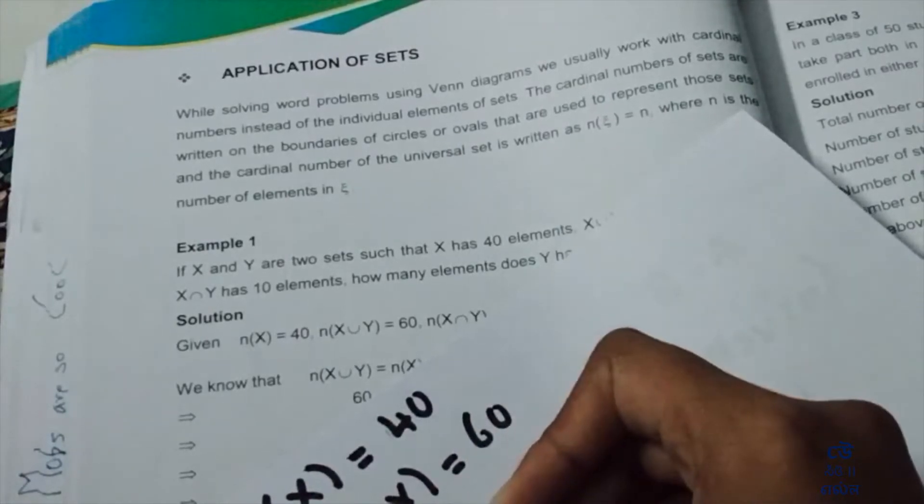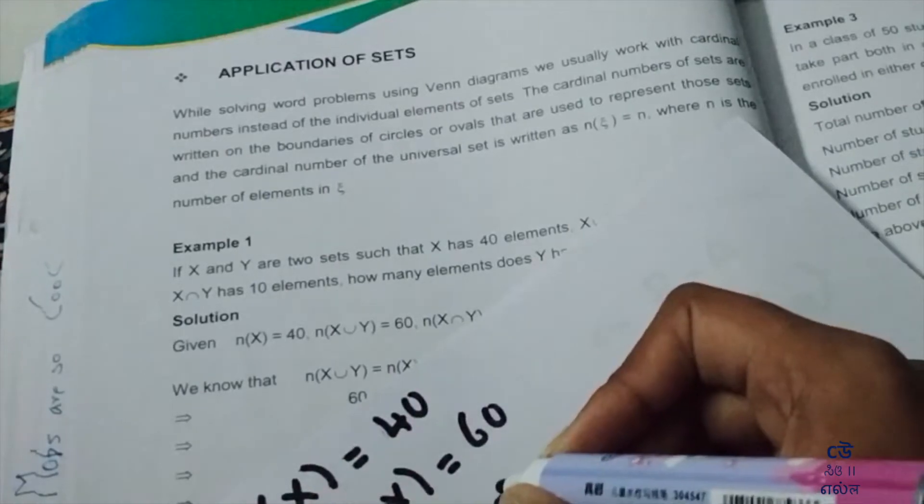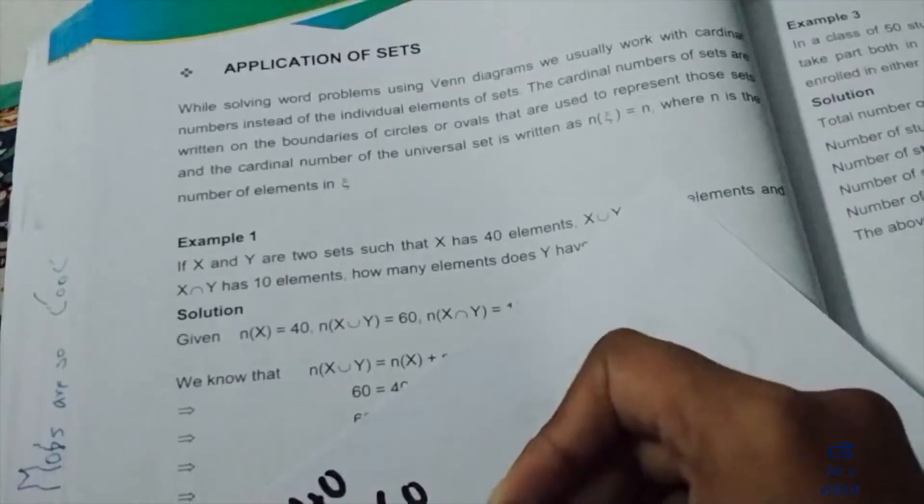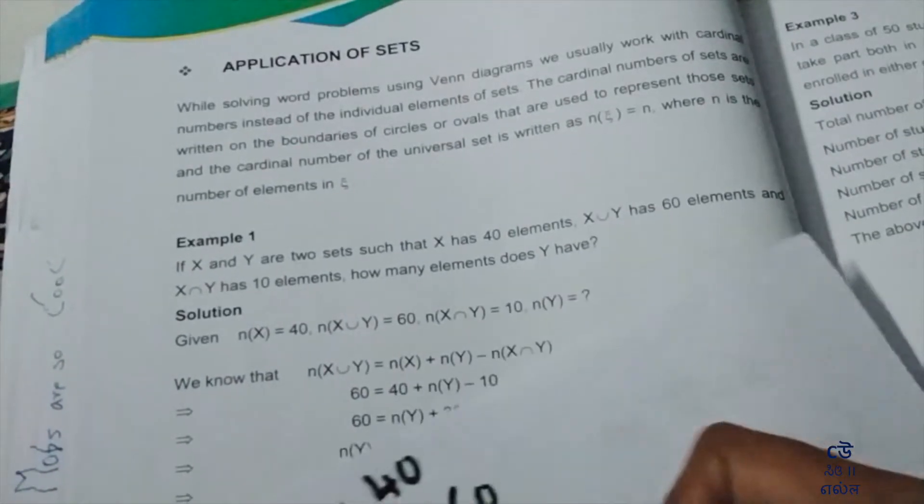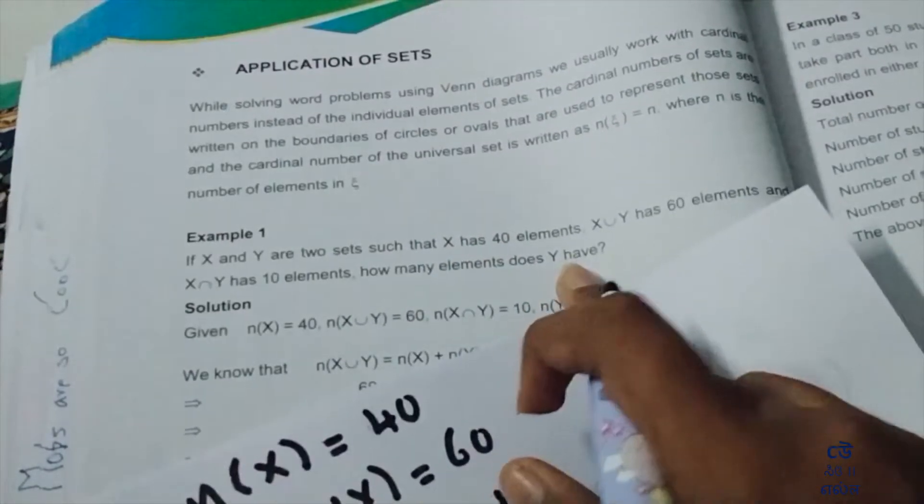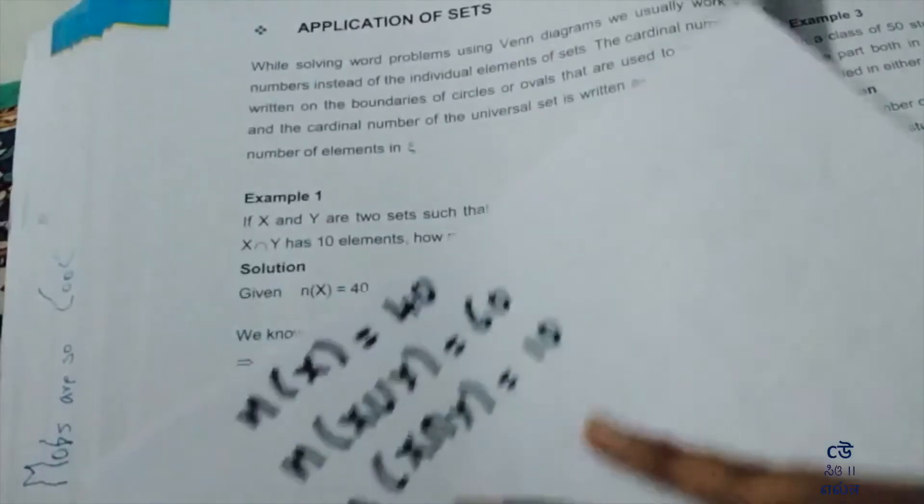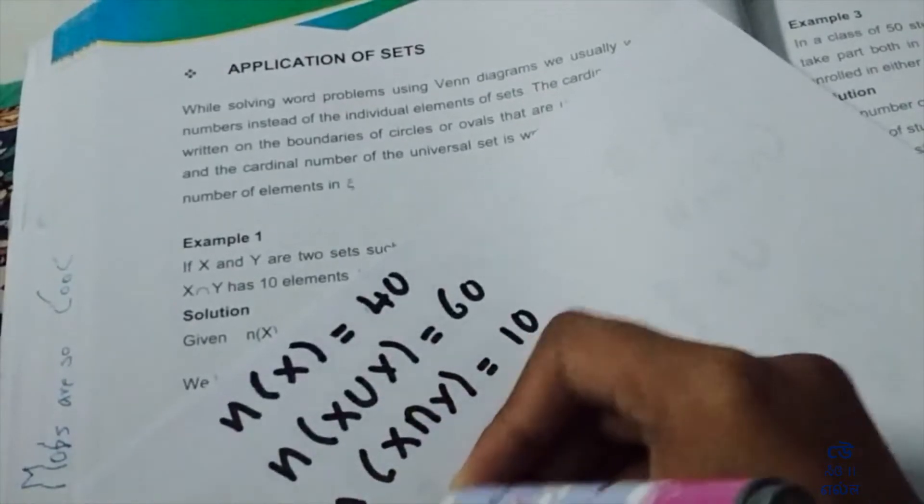First question: If X and Y are two sets such that X has 40 elements, n(X) = 40, X union Y has 60 elements, n(X∪Y) = 60. This is the given data. How many elements does Y have? We need to find n(Y).